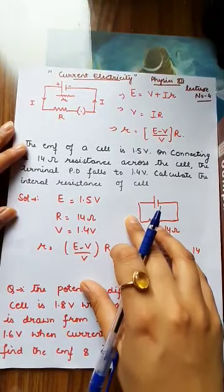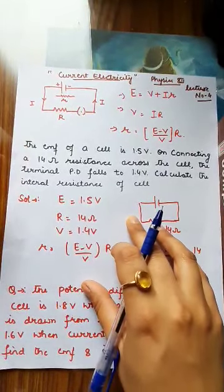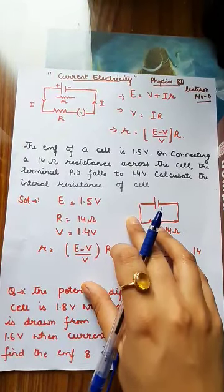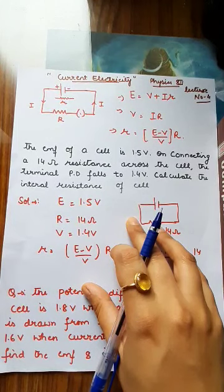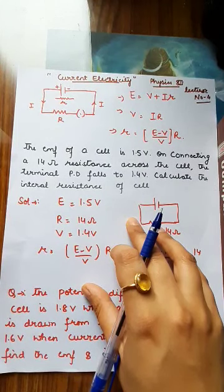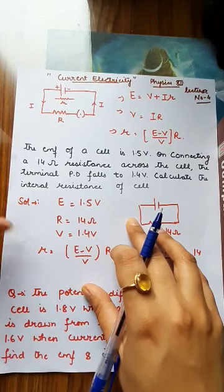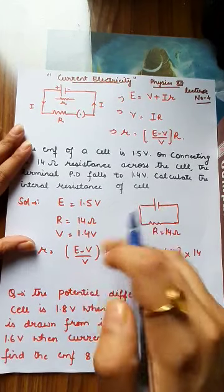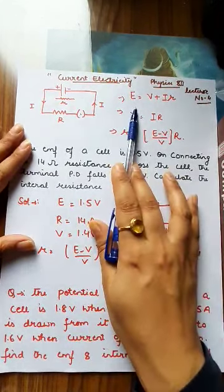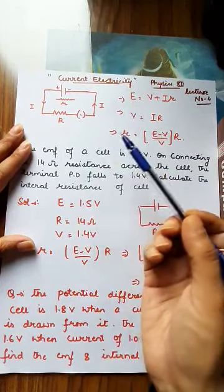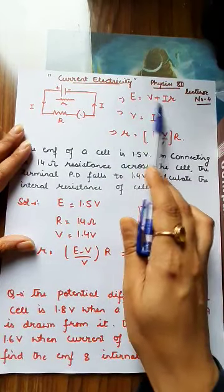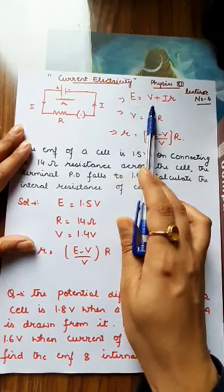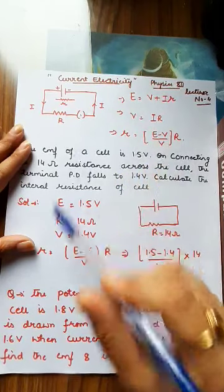So students, I am going to proceed to my previous topic, that is the relation between the internal resistance, terminal potential difference, and the EMF of a cell. As you all know, the relation between the EMF of a cell, the terminal potential difference and the potential difference is E is equal to V plus IR, which we have studied in the last lecture.